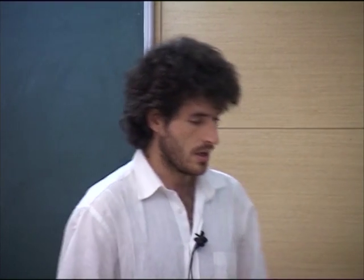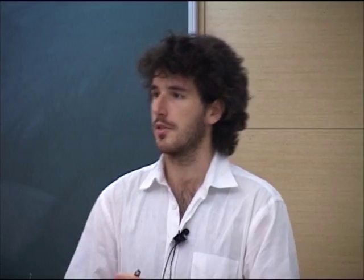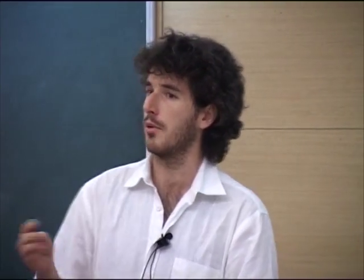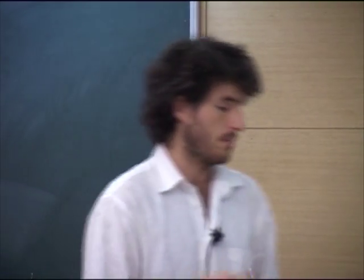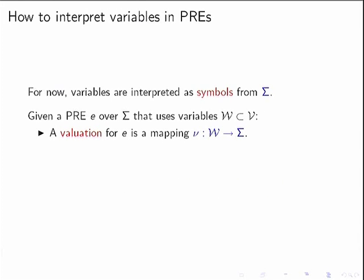Here are two examples of parameterized regular expressions over the alphabet {0, 1}. These expressions naturally define a language over the combined alphabet, but what is more interesting is to make them define languages over sigma alone. To do this, we first need to define the concept of valuation.